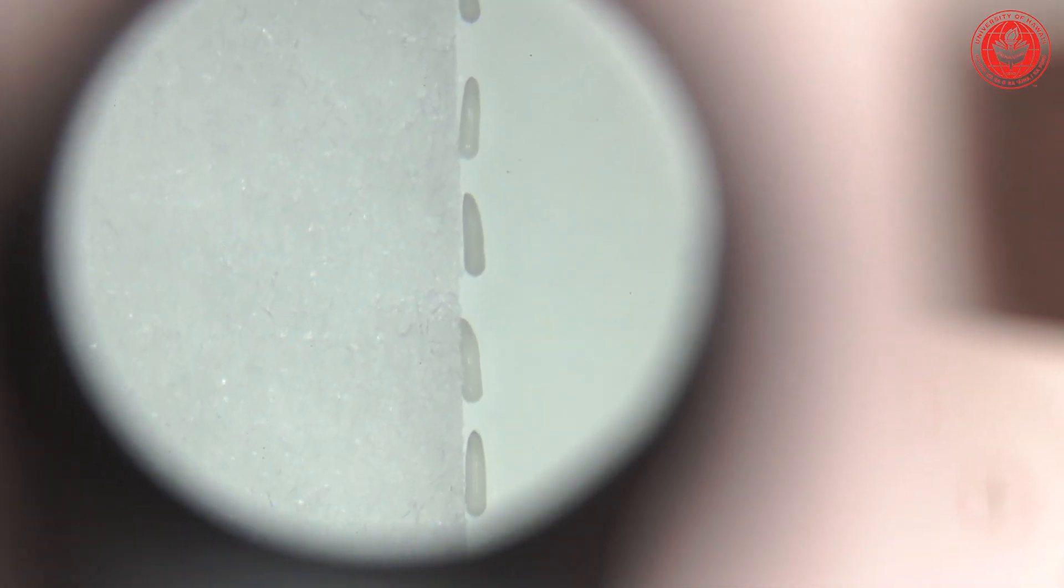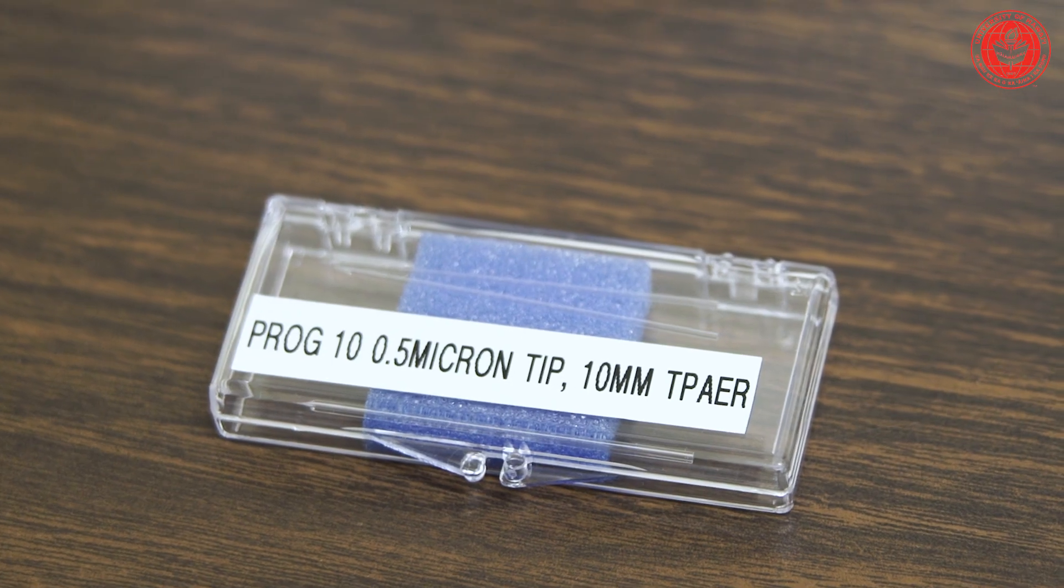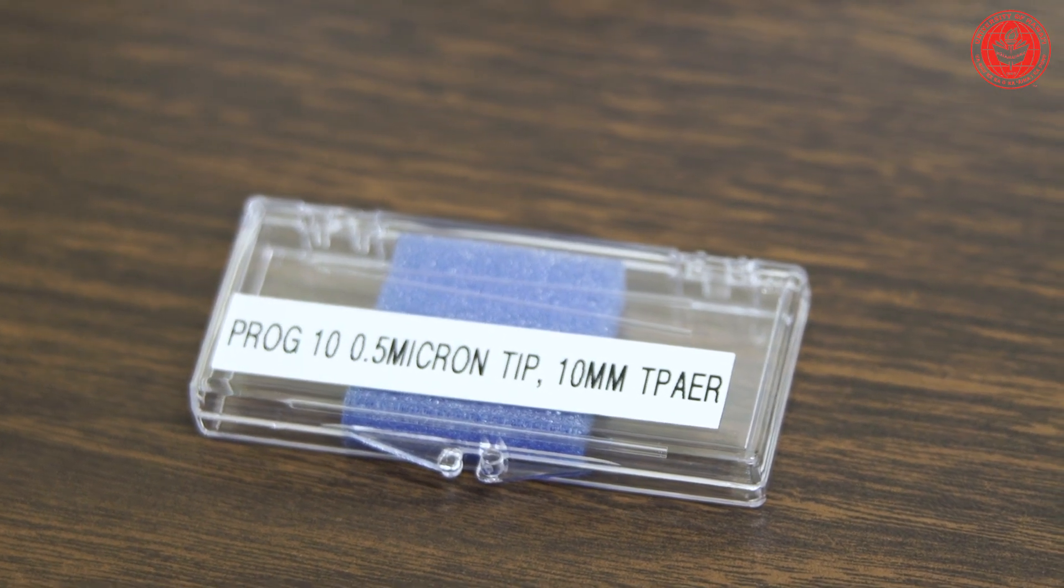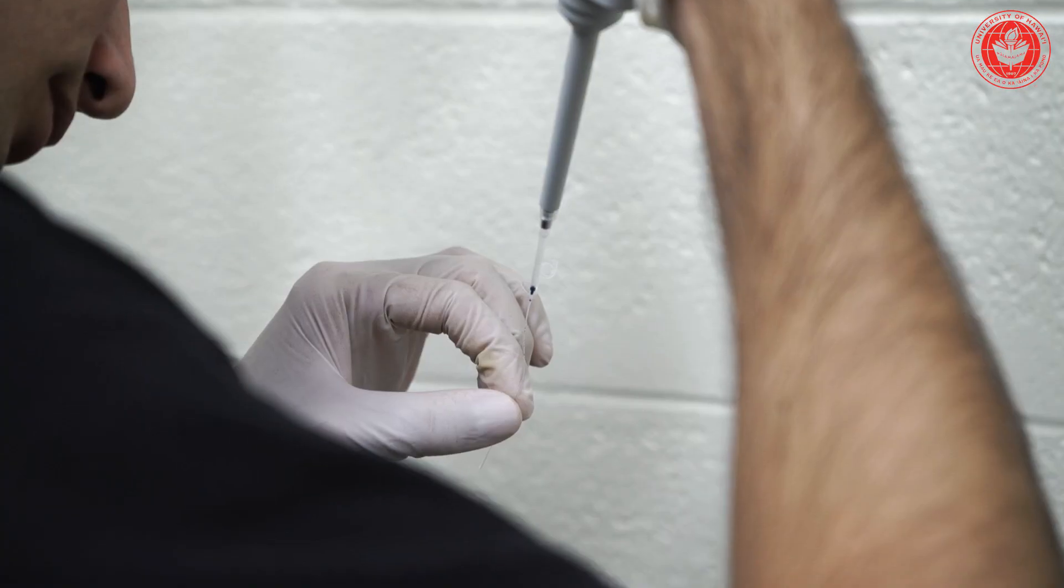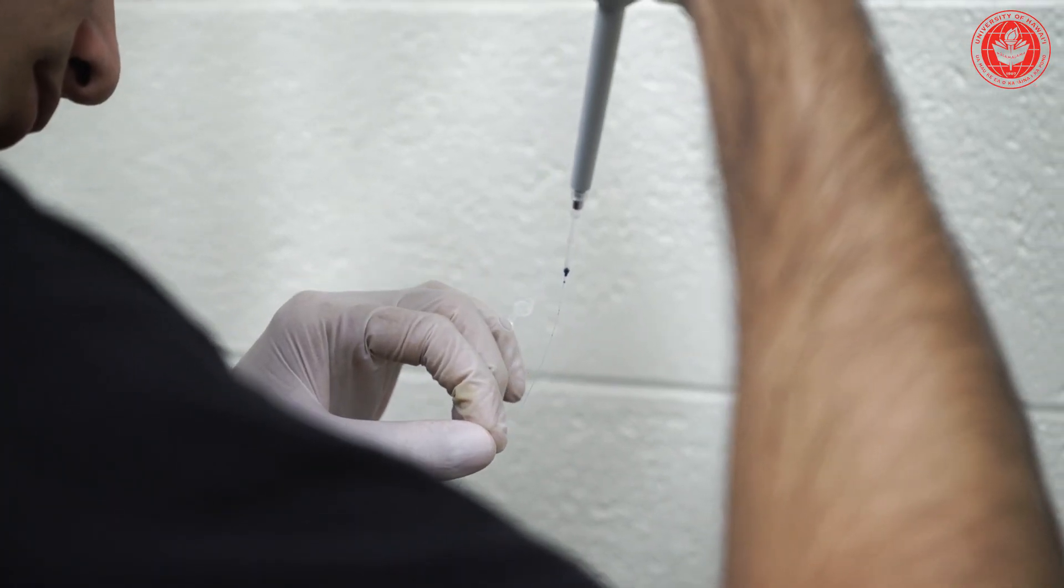This sets us up for our microinjections. Basically what we do is we have a very small, almost microscopic needle where we pierce the eggs and inject a solution with a certain gene of interest that we want to be integrated and expressed into the mosquitoes.